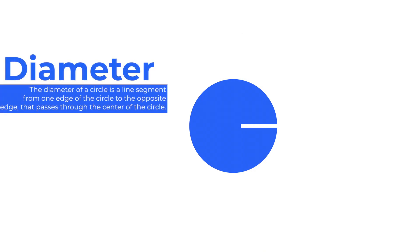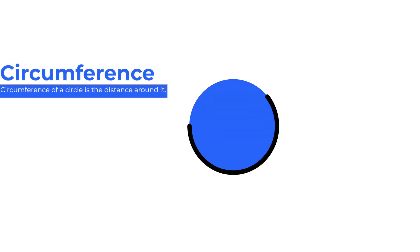The diameter of a circle is a line segment from one edge of the circle to the opposite edge that passes through the center. The circumference of the circle is the distance around it. Pi shows the ratio of the circumference to the diameter.